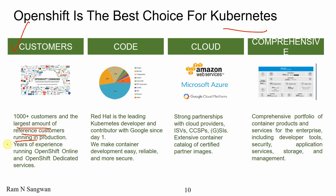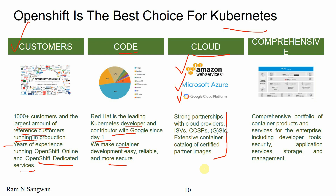OpenShift has over 1,000-plus customers and the largest number of reference customers running in production. Years of experience running OpenShift Online and OpenShift Dedicated services. Red Hat is a leading Kubernetes developer and contributor with Google since day one, maintaining development to make it easy, reliable, and more secure. Amazon Web Services, Microsoft Azure, and Google Cloud Platform are all supported — strong partnerships with cloud providers. A comprehensive portfolio of container products and services for the enterprise, including developer tools, security, application services, storage, and management.